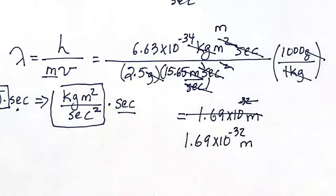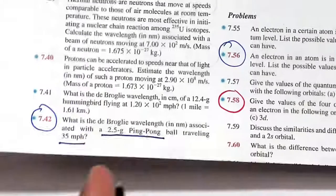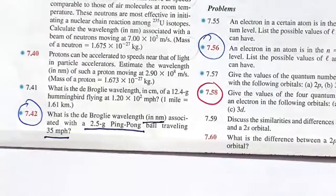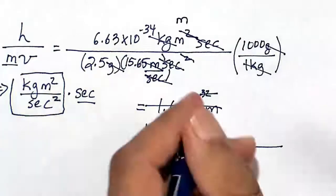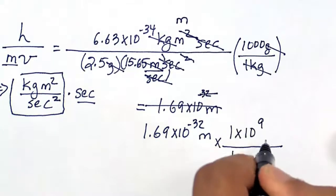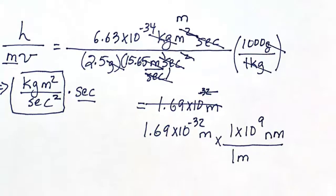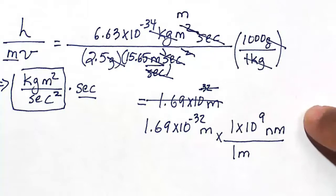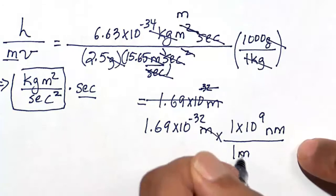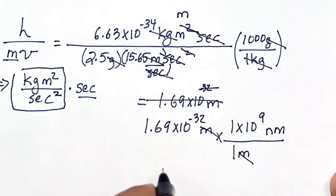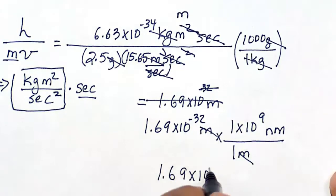The answer asks us to solve for it in nanometers. One meter is a large length, so that large length is going to be 1 times 10 to the 9 nanometers because 1 meter is big. That big is going to contain a lot of nanometers. Nano means 9. So 1 meter contains within it 10 to the power of 9 nanometers. The meters cancel. My final wavelength here is 1.69 times 10 to the minus 23 nanometers.